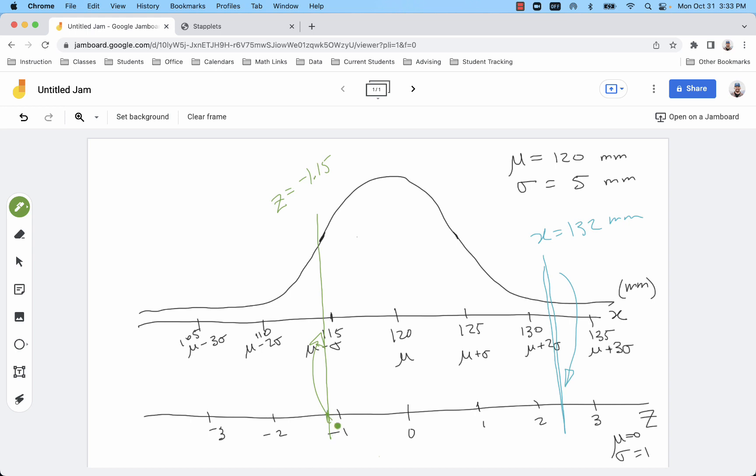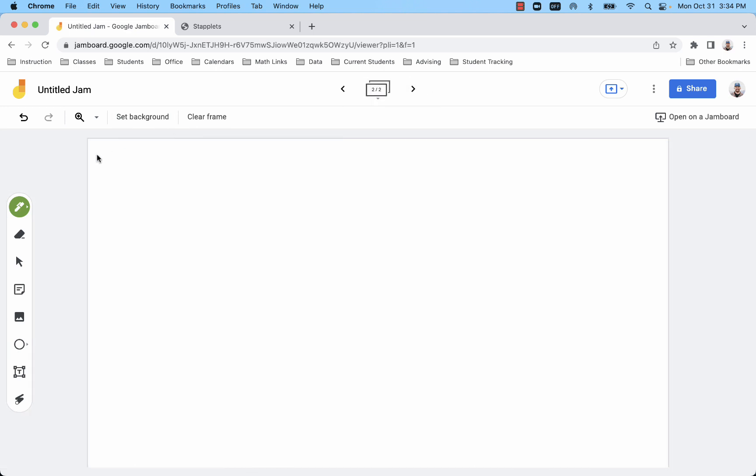The negative 1.15 would register down on this Z-axis, even though I wrote it up there. And we want to convert that to X. So let's start with the blue one.